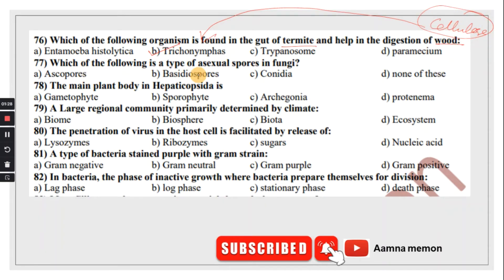Which of the following is a type of asexual spore in fungi? Conidia. The main plant body in Hepaticopsida is gametophyte. A large regional community primarily determined by climate is biome.